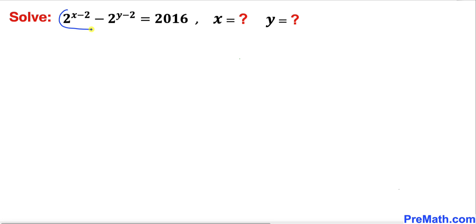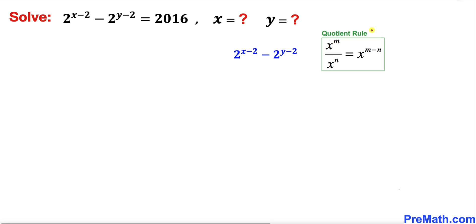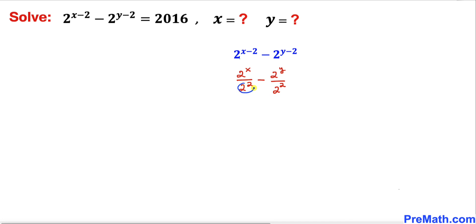Let's focus on the left hand side of this equation. We are going to apply the quotient rule on both terms. The first term can be written as 2 power x divided by 2 power 2, and likewise the second term becomes minus 2 power y divided by 2 power 2. Since 2 power 2 equals 4, we get 2 power x over 4 minus 2 power y over 4.